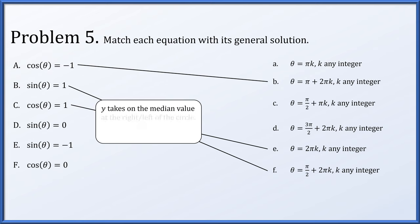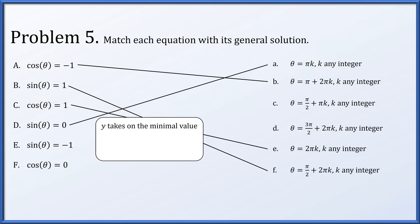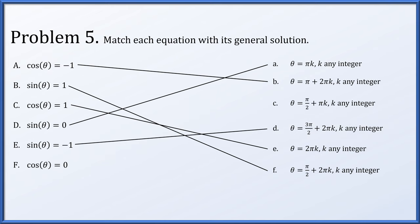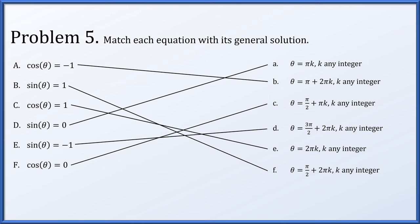Sine of theta equals 0 occurs at the left and right of the circle — at angles 0 and pi — so it happens twice per rotation, every half rotation: 0 plus pi k. Sine of theta equals minus 1 is at the bottom of the circle at 3 pi over 2, once per rotation: 3 pi over 2 plus 2 pi k. Finally, cosine of theta equals 0 occurs at the top and bottom at pi over 2, twice per rotation: pi over 2 plus pi k. All six equations are now matched to their solutions.